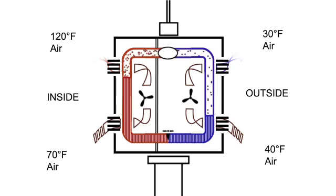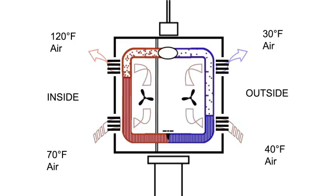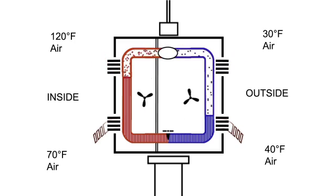In a heat pump, we simply reverse the flow in the winter when we want heat. By switching the direction of the coolant, the cold side, the evaporator, flips to the outside of the building, and the warm side, the condenser, moves to the inside.